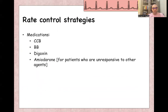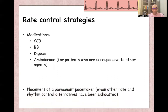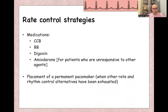Rate control strategies include medications like calcium channel blockers, beta blockers, digoxin, and amiodarone — amiodarone is usually used for patients who are unresponsive to other agents. Placement of a permanent pacemaker is used when other rate and rhythm control alternatives are exhausted.